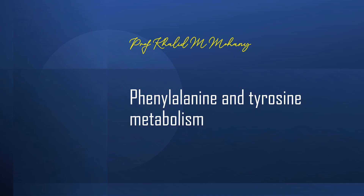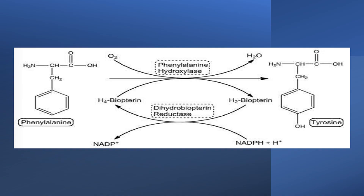Bismillah ar-Rahman ar-Rahim. Today inshallah we will discuss the lecture about phenylalanine and tyrosine metabolism. It will be recorded in English for the benefit of our Indian students. Phenylalanine and tyrosine are both aromatic amino acids, and by aromatic amino acid we mean that these amino acids contain a benzene ring. This is the phenyl group or benzene ring group, and this is the alanine — so it is called phenylalanine.